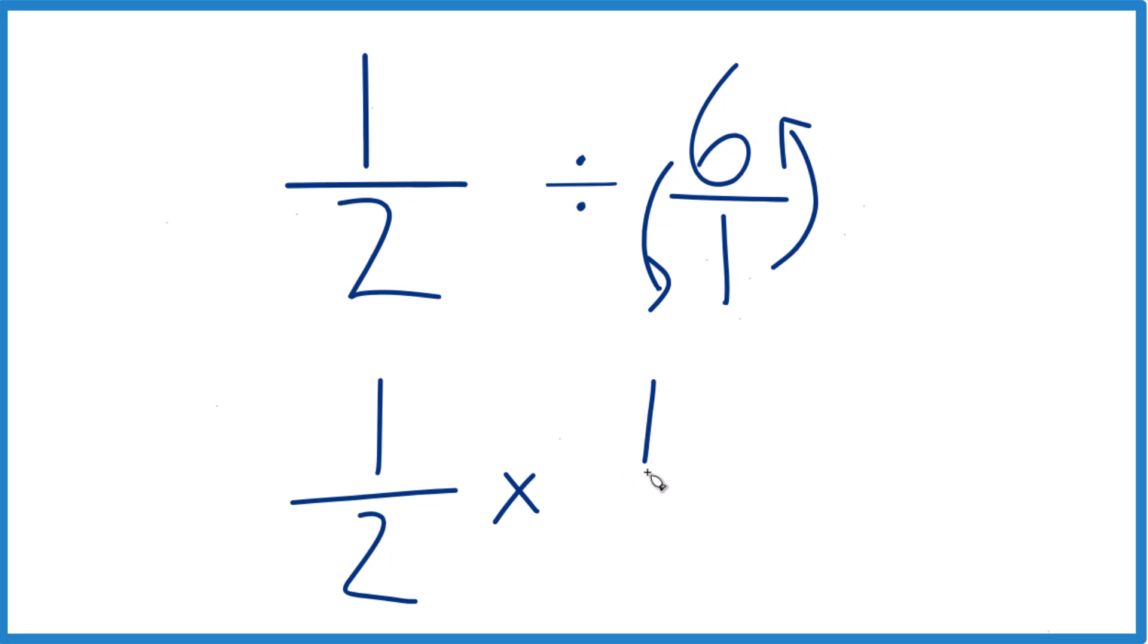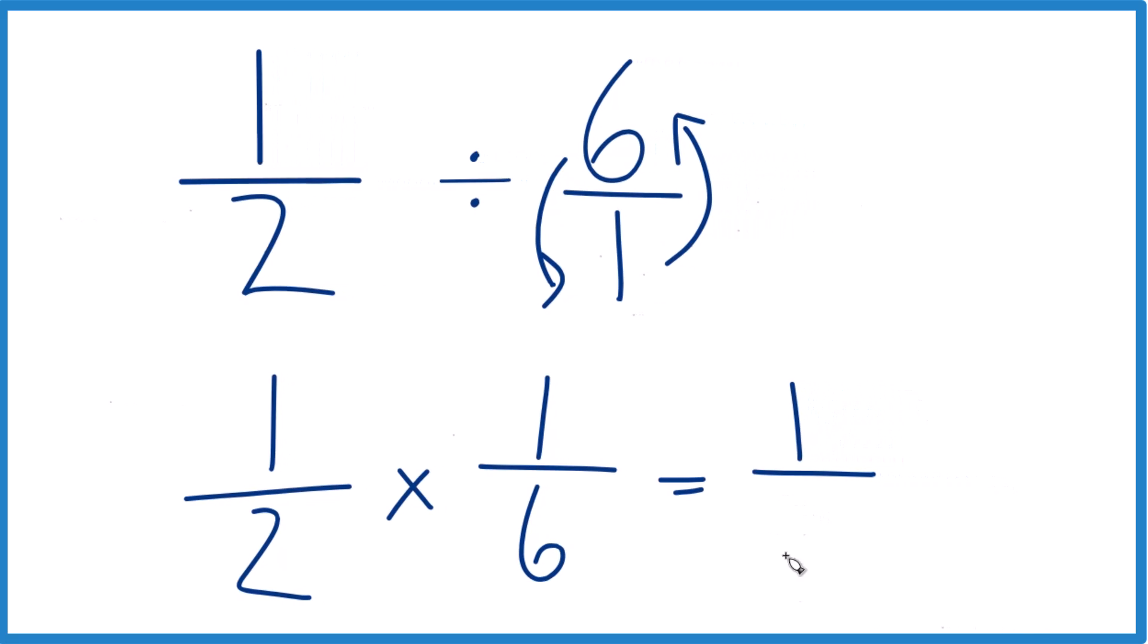So we have one on top, six goes on the bottom. So now we have one-half times one-sixth. One times one is one, two times six is twelve,